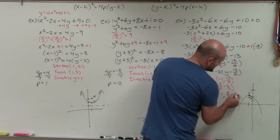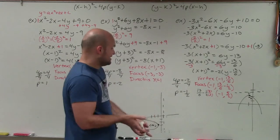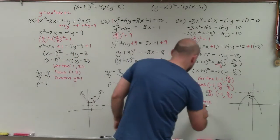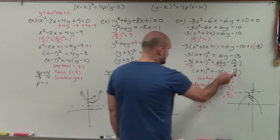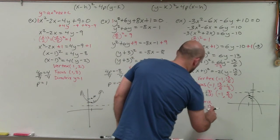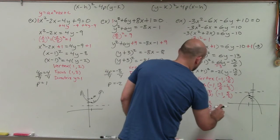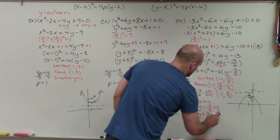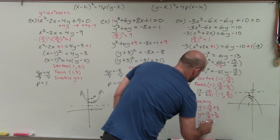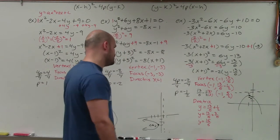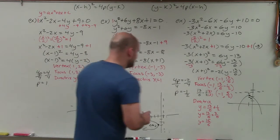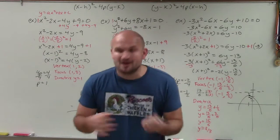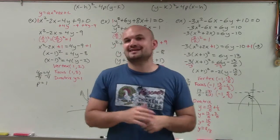For the directrix, since p is −1/2, we add 1/2 to the vertex's y-coordinate: 13/6 + 1/2 = 13/6 + 3/6 = 16/6, which simplifies to 8/3. So the directrix is the horizontal line y = 8/3. That is how you identify the vertex, focus, and directrix when given a conic section in standard form by completing the square.